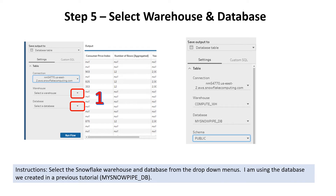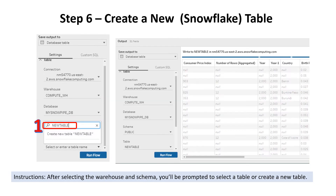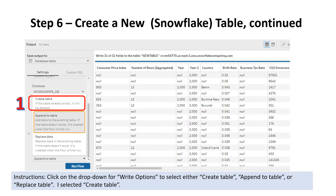Select the Snowflake warehouse and database from the drop-down menus. I'm using the database we created in a previous tutorial called My Snowpipe underscore DB. After selecting the warehouse and the schema, you'll be prompted to select a table or create a new table. Click on the drop-down for Write Options to select either Create Table, Append to Table, or Replace Table — and then I selected Create Table.